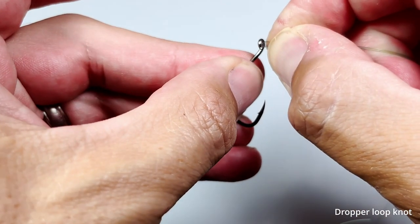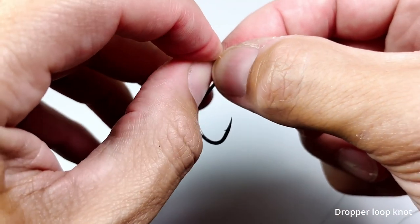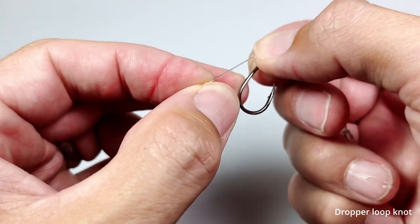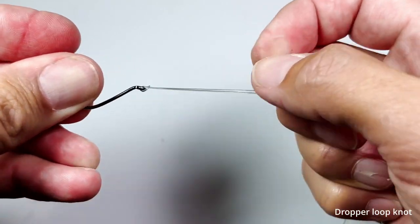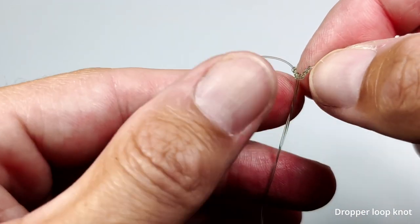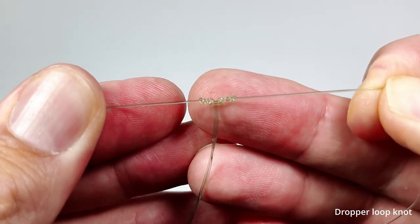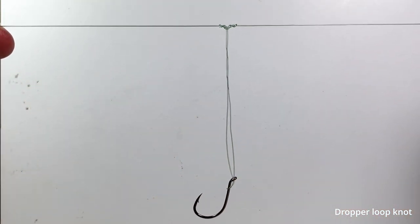Then pass the loop through the eye of the hook, then the hook back through the loop. The knots on both sides of the loop keep the loop perpendicular to the line. And that's the dropper loop knot.